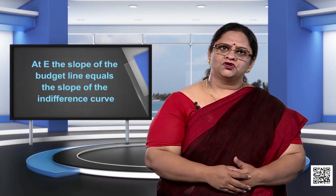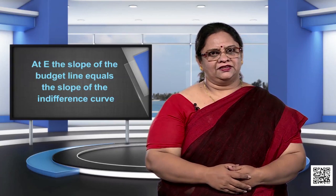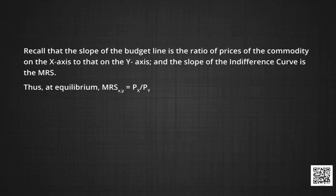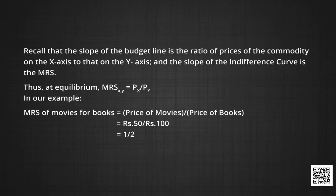At E, the slope of the budget line equals the slope of the indifference curve. Recall that the slope of the budget line is the ratio of the price of the commodity on the x-axis to that on the y-axis, and the slope of the indifference curve is the marginal rate of substitution. This gives us the equilibrium condition: the marginal rate of substitution between x and y equals the ratio of prices px divided by py. In our example, the marginal rate of substitution of movies for books equals the price of movies divided by the price of books, which is Rs. 50 divided by Rs. 100, equals one half.